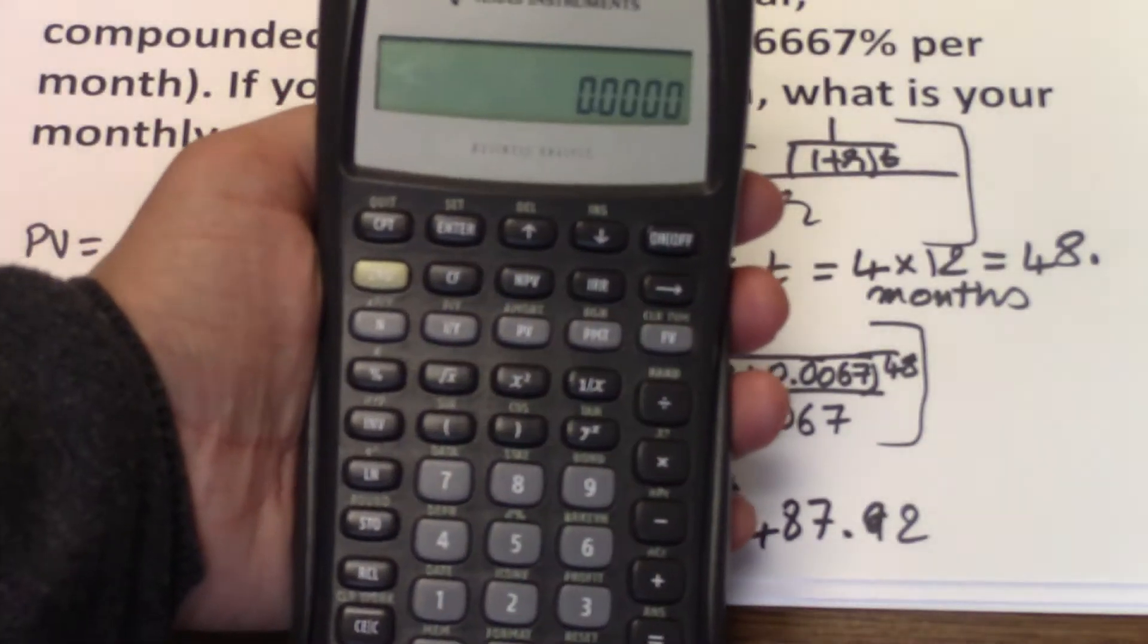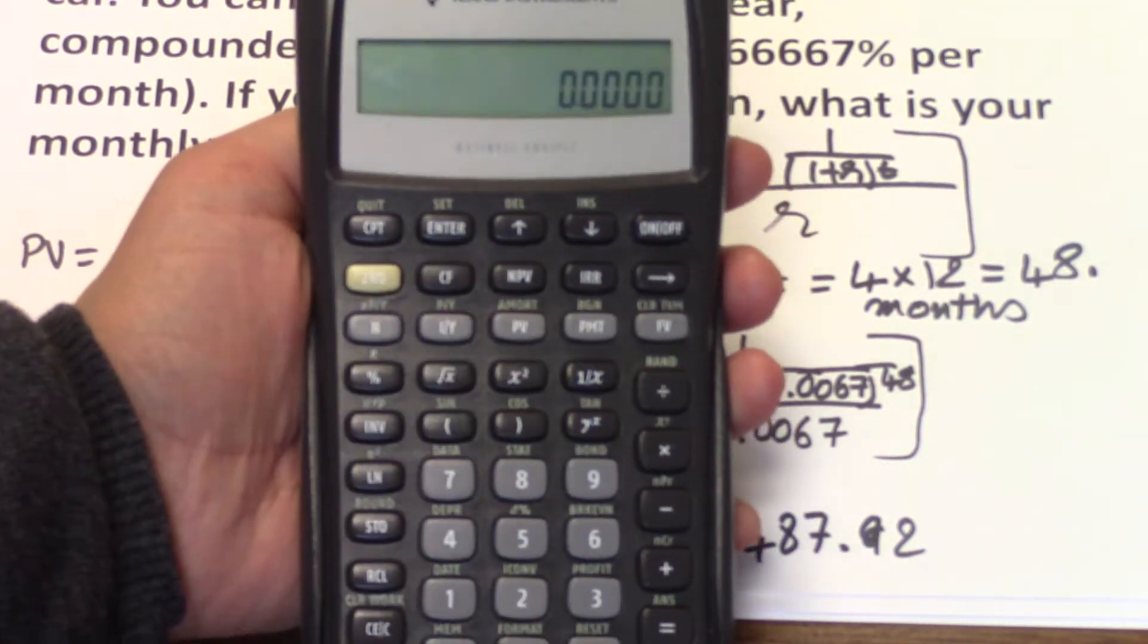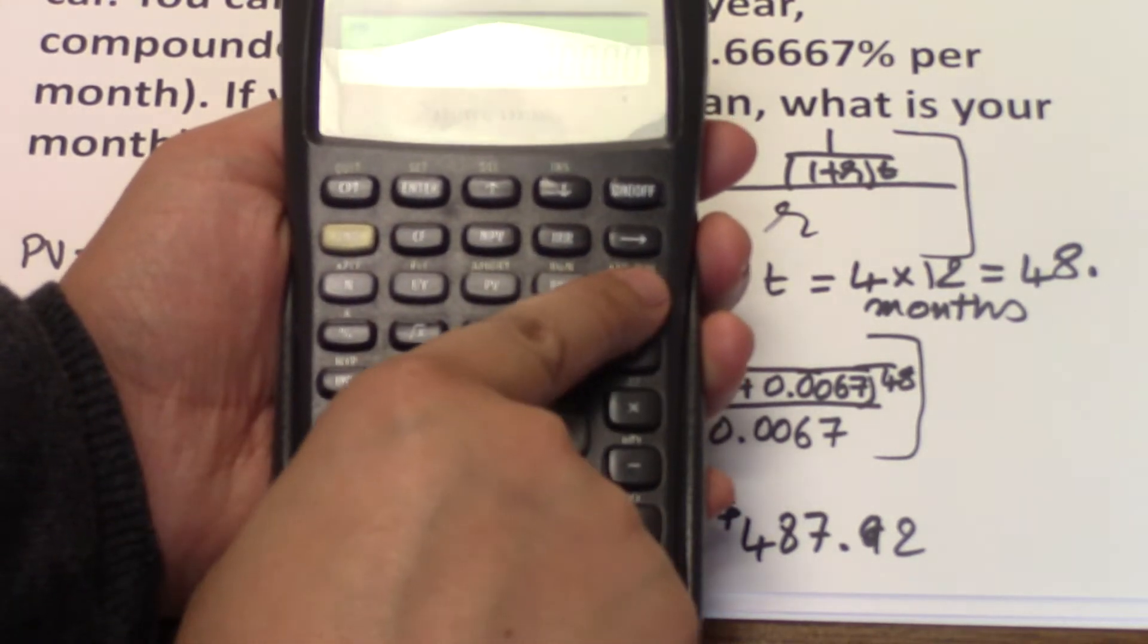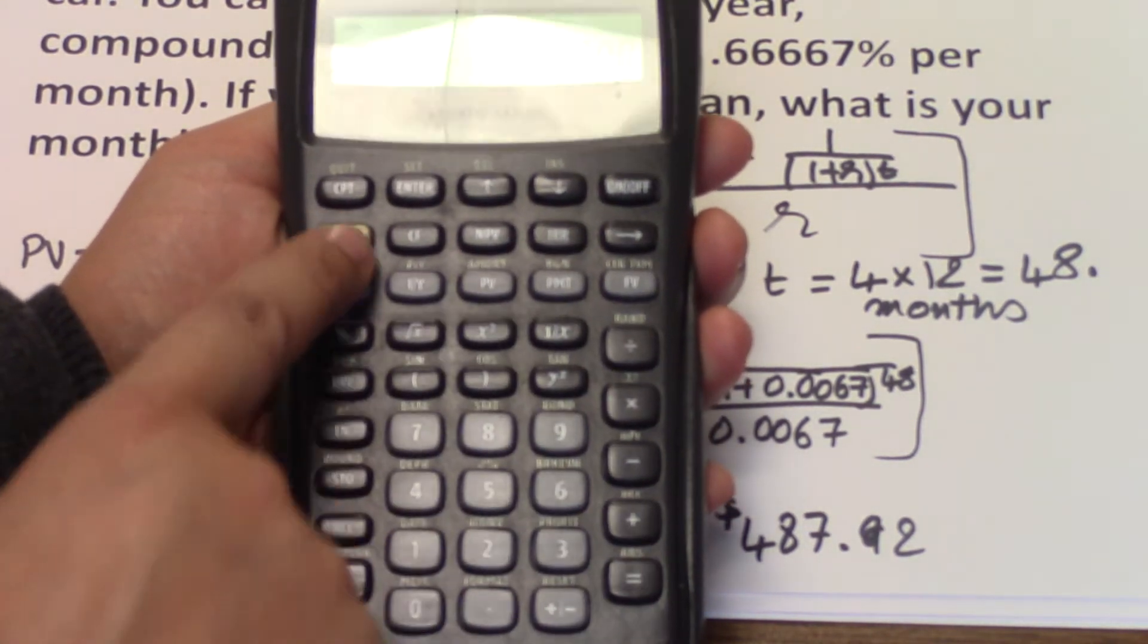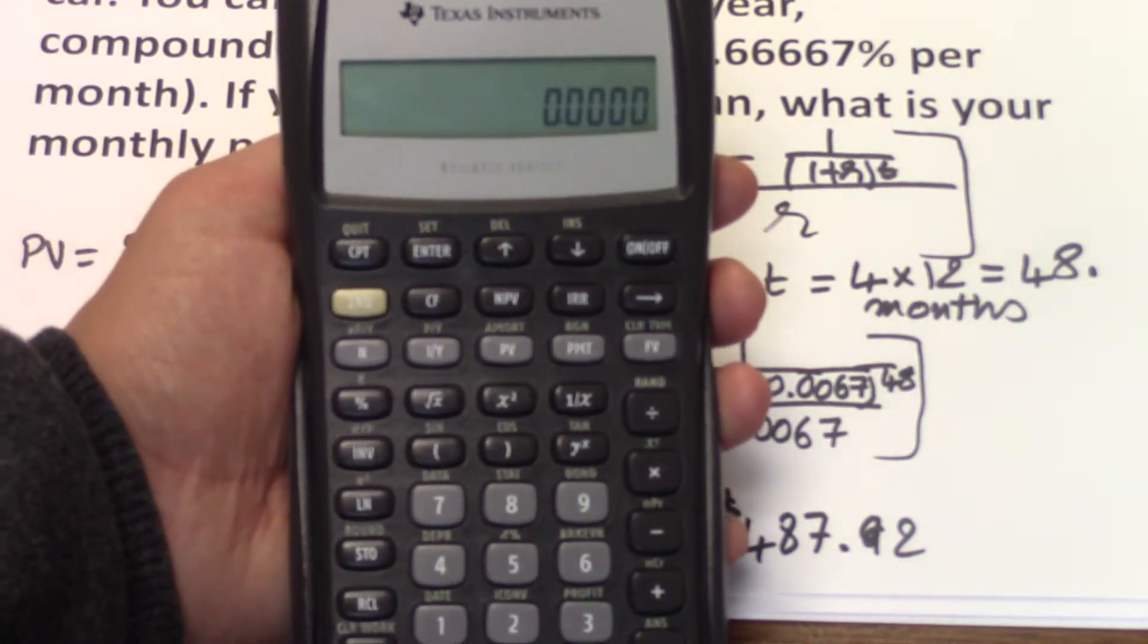This is the information you need to input. You're looking for the PMT. But first, before we do anything, always clear. So second FV, second CEC to clear all time value of money calculations.